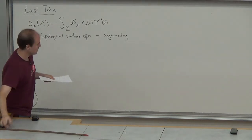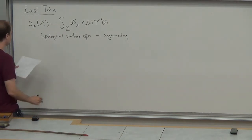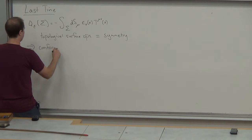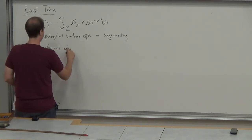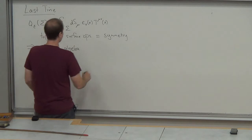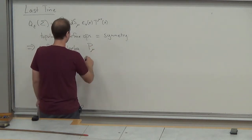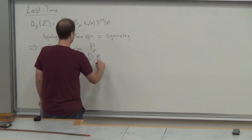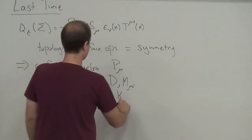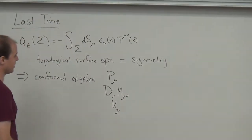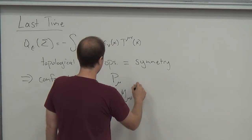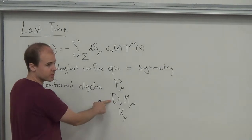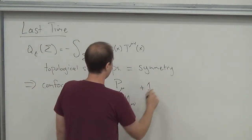By looking at the space of solutions to the conformal killing equation, we found the conformal algebra, which has the generators of translations, the dilatation generator, the generators of rotations, and the special conformal generators. These have various scaling dimensions. If we classify them according to their eigenvalue under commutation with D, then T_nu has a plus one.